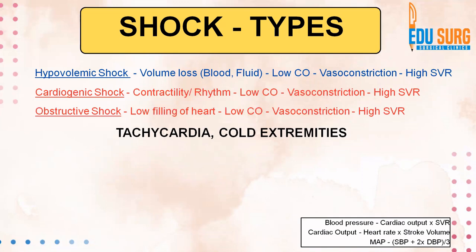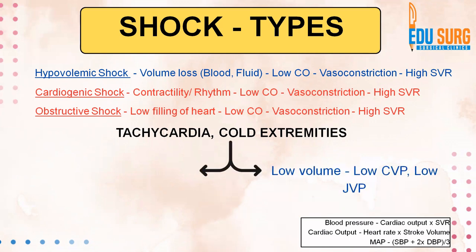In all these three kinds of shock, there is tachycardia and there are cold extremities because of vasoconstriction. When there is vasoconstriction and organ perfusion starts getting compromised, the heat is provided by blood. So when vasoconstriction starts happening, extremities become cold. This is a cold shock. When we say low volume — the blue color — we are looking at hypovolemic shock.